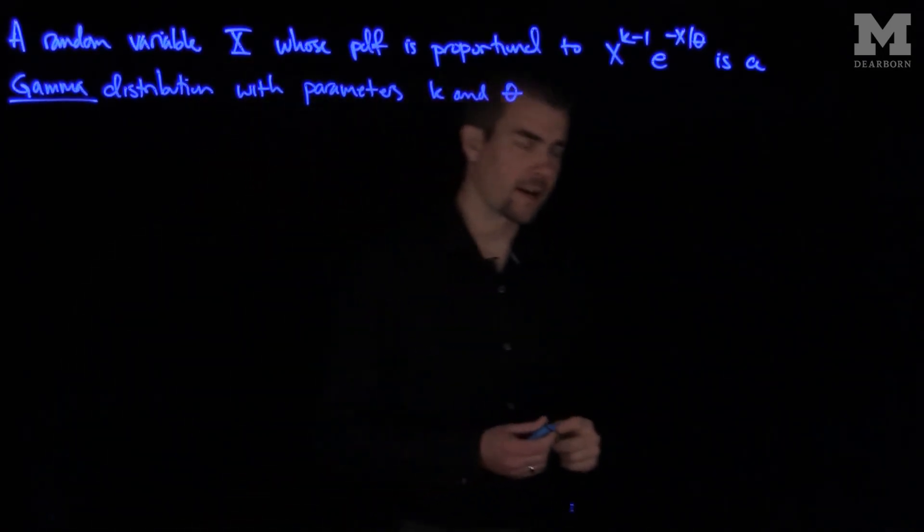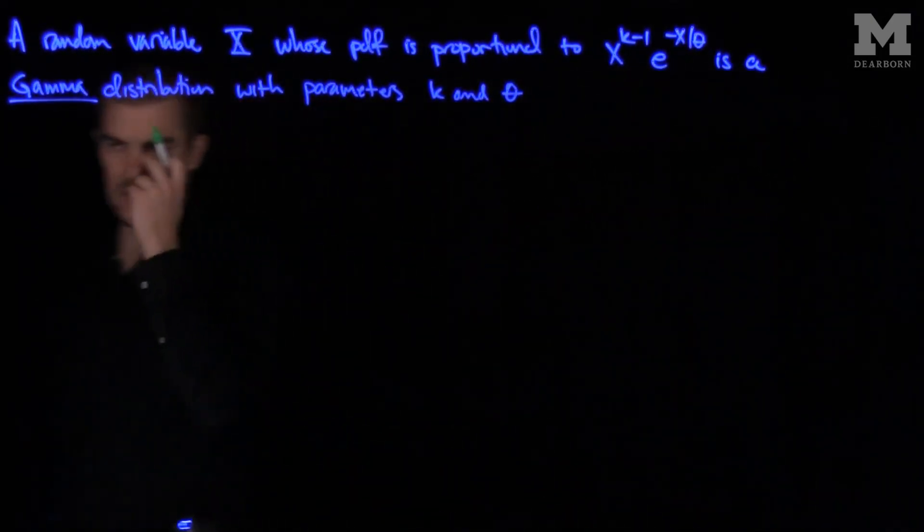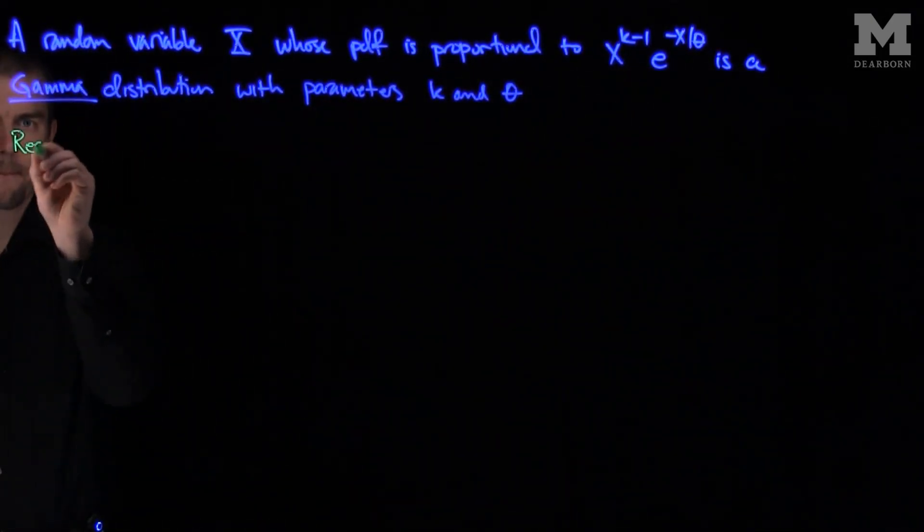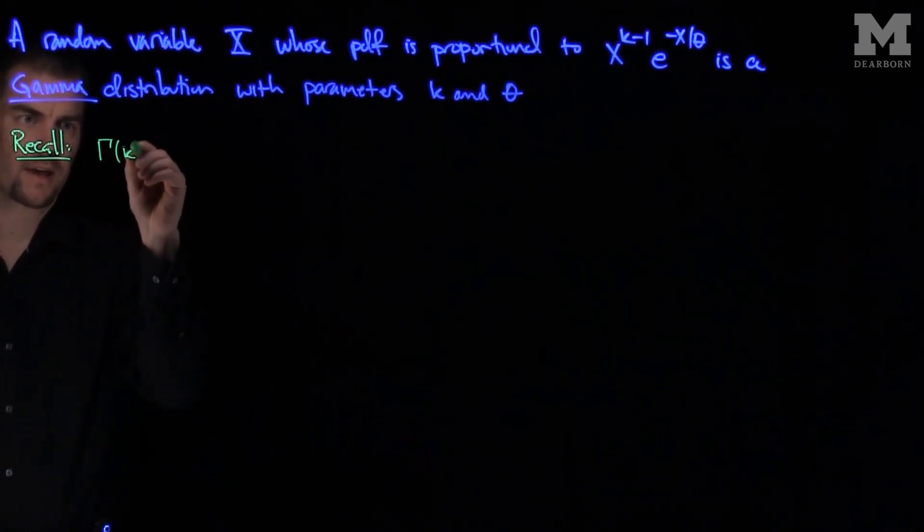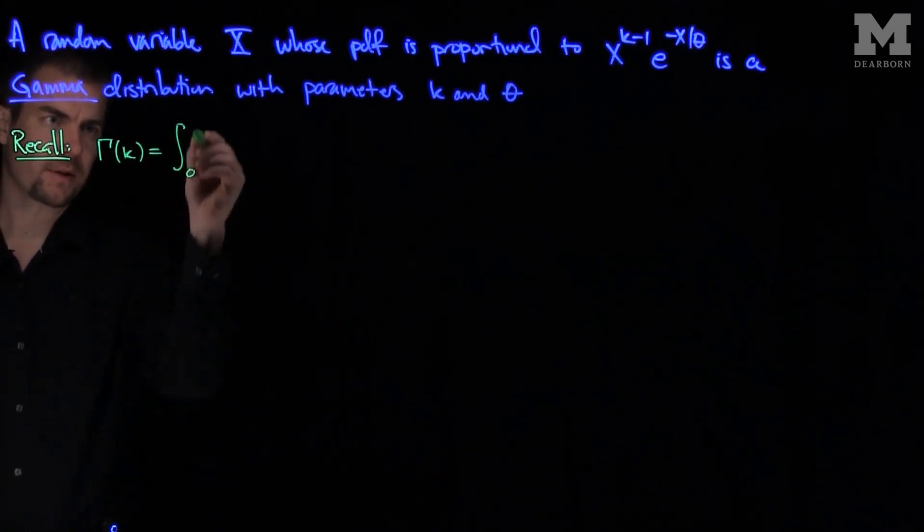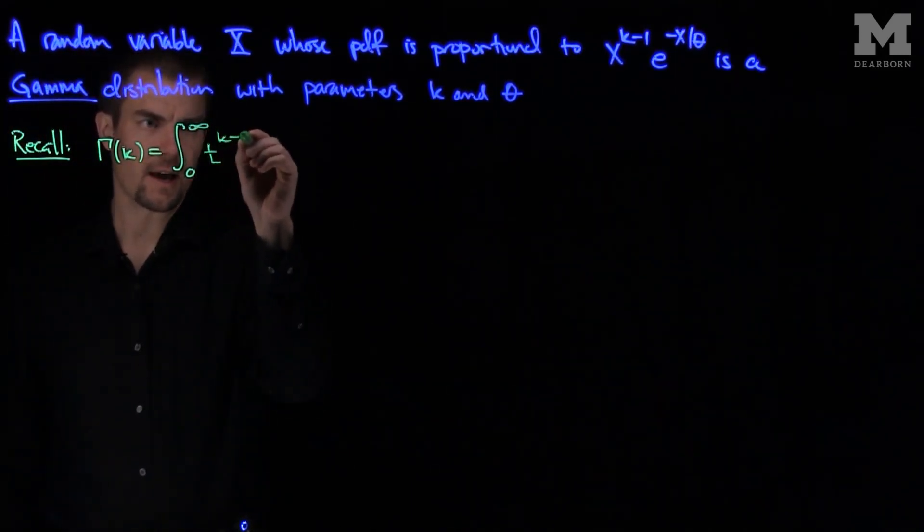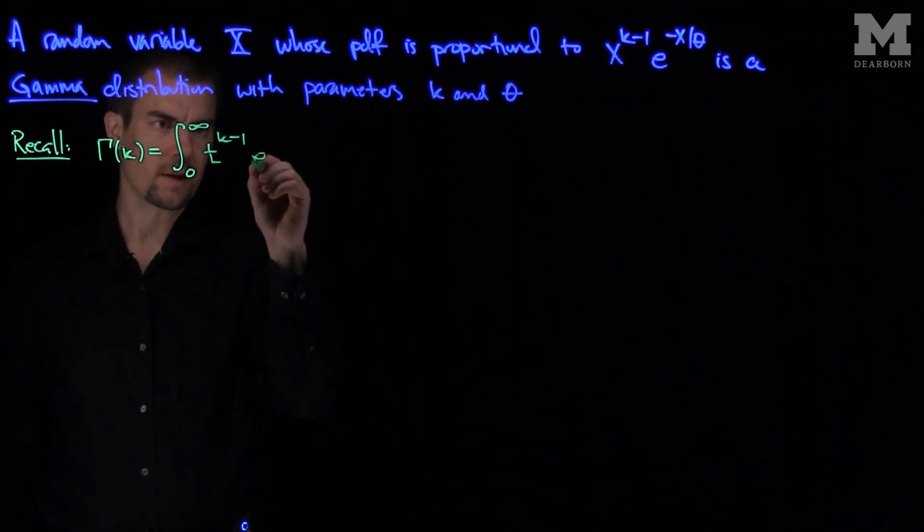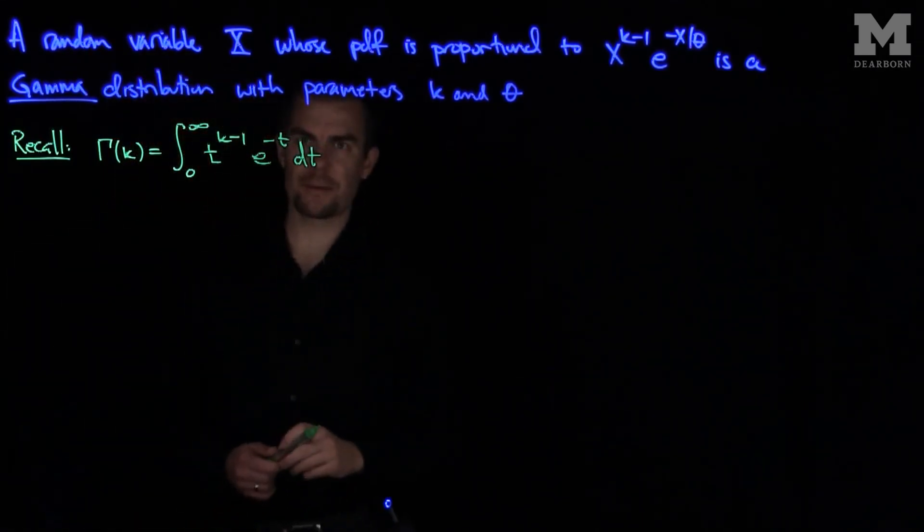So the first thing we need to do is figure out what that constant of proportionality is. And so what we'll do is recall the definition of the gamma function. Recall that gamma of k is the integral from 0 to infinity of t to the k minus 1, e to the negative t dt. This is the definition of the gamma function.